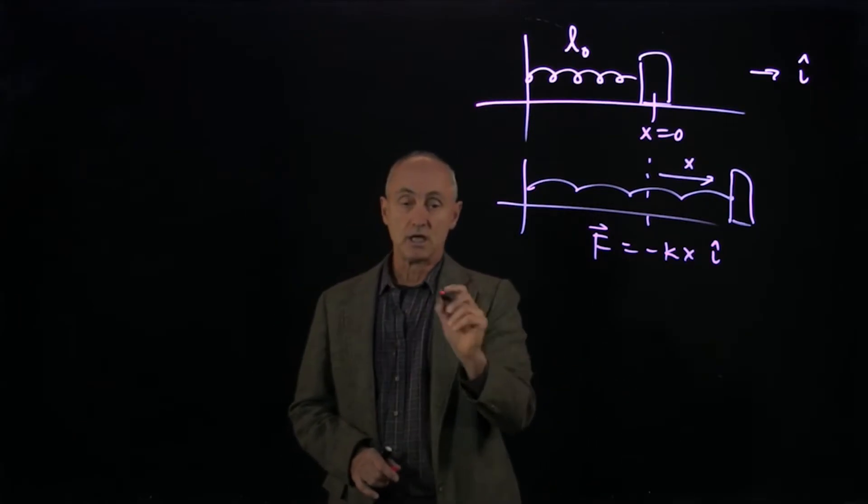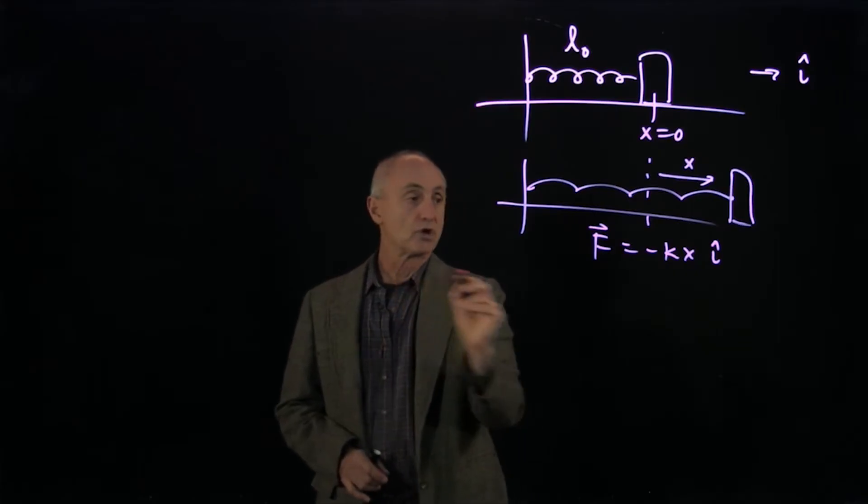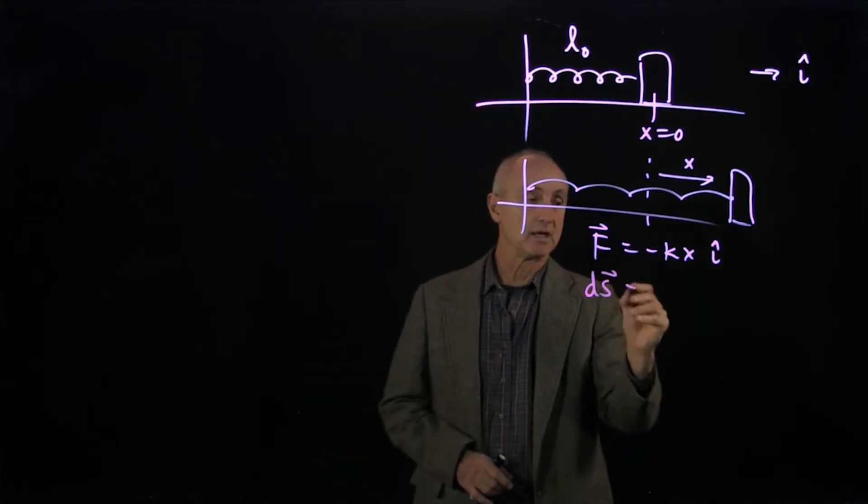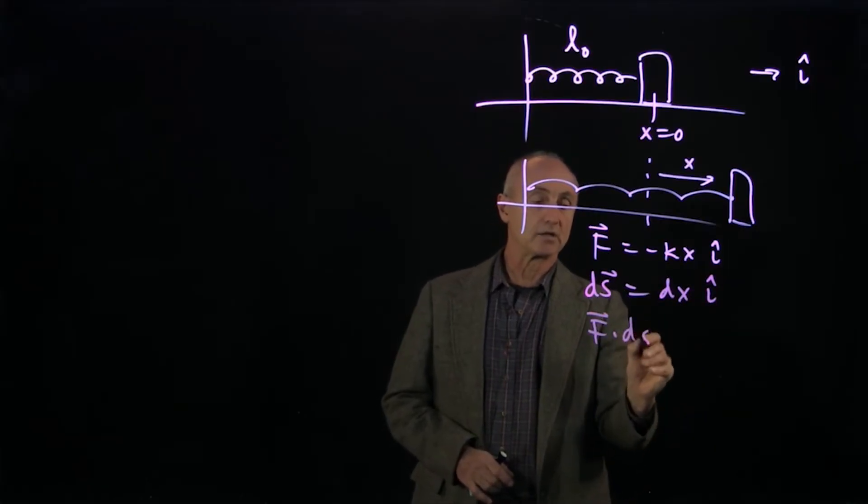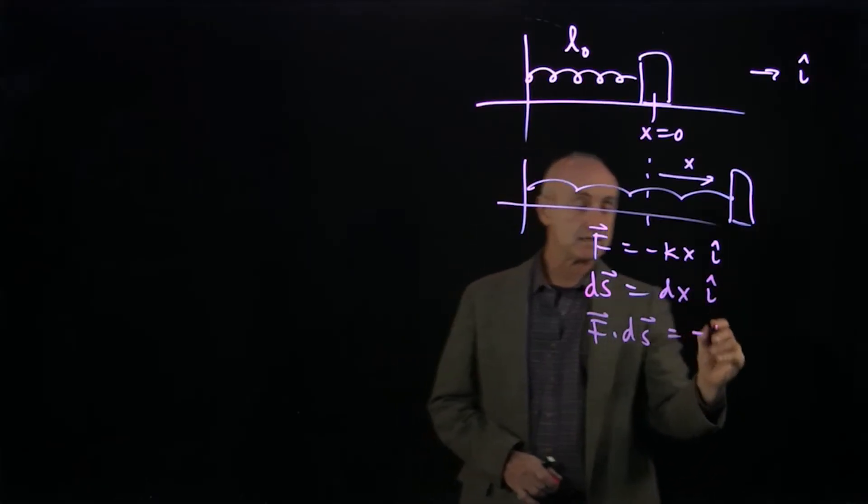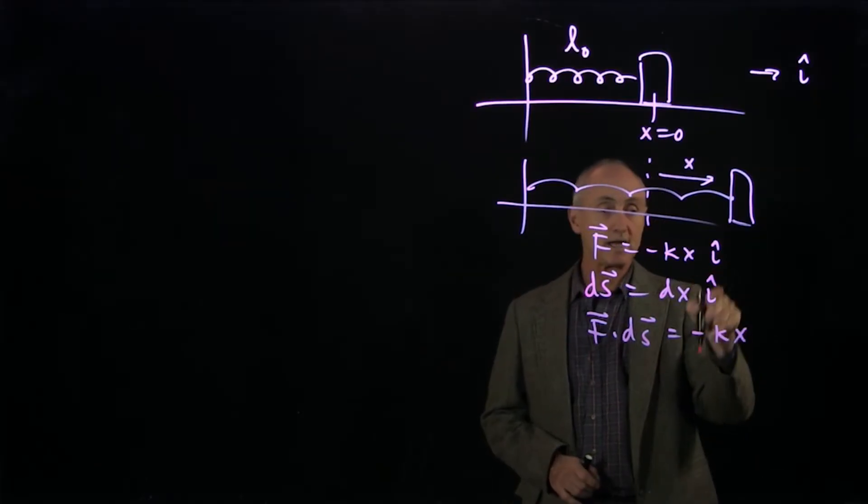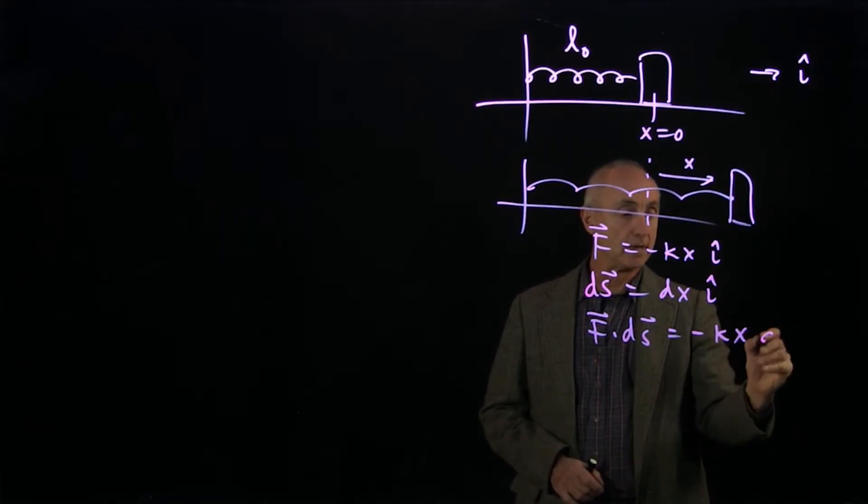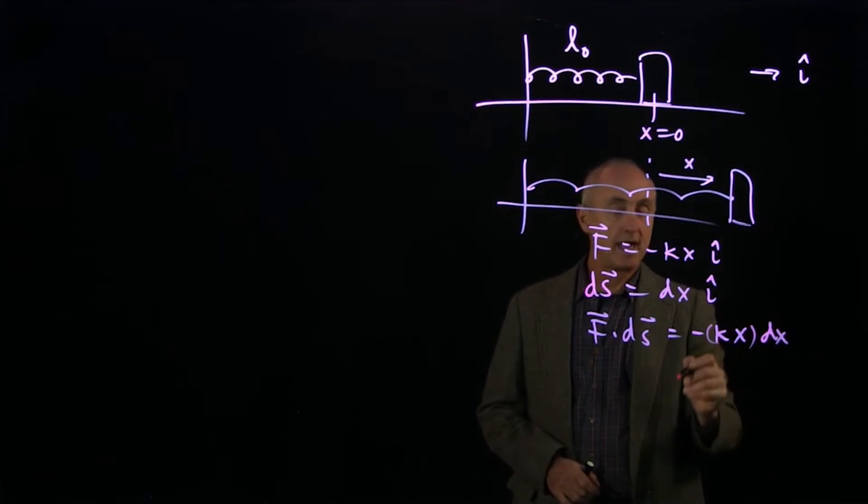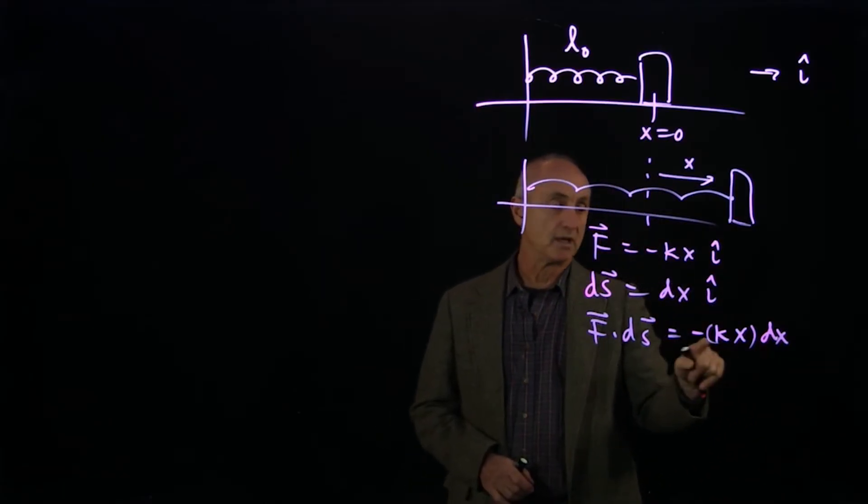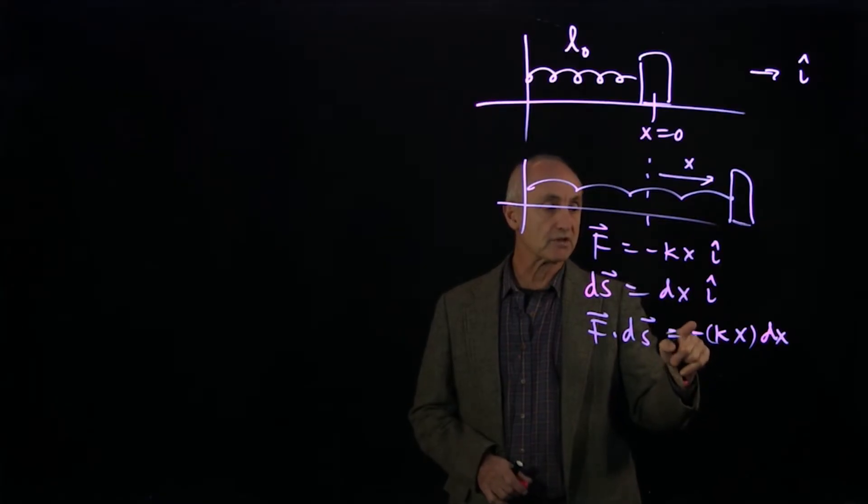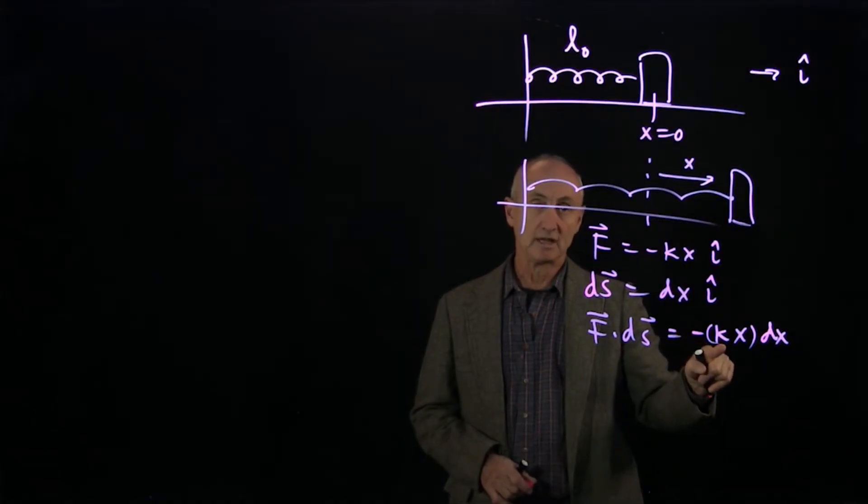So the first calculation is straightforward. If we took our displacement to be dx i hat, and we take the dot product of F·ds, we get minus kx dx i hat dot i hat is 1 times dx. And that's just the x component of the force displacement, and minus sign because the x component of the force is negative kx.